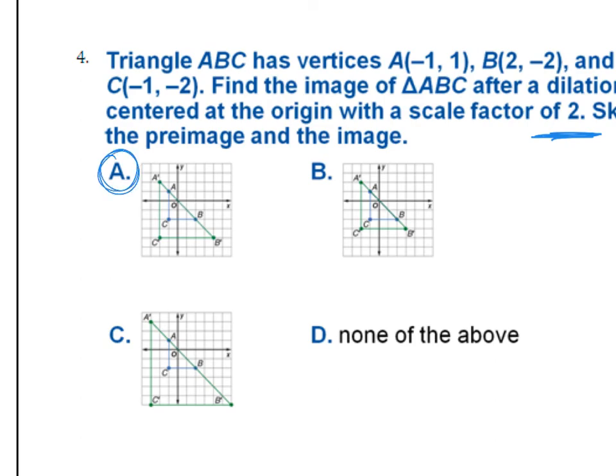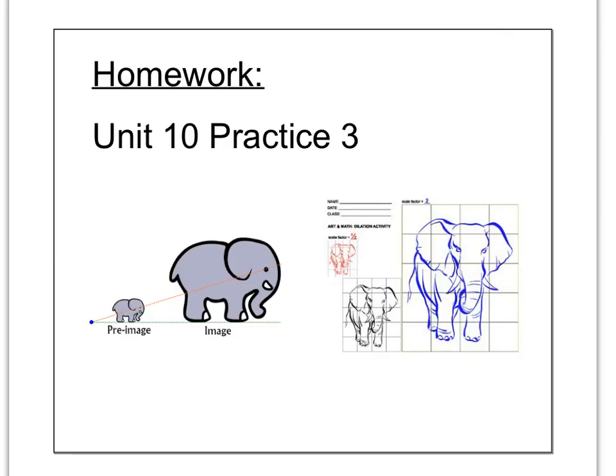The answer is A. So what happened on A is if you take all the points, A prime if it went through a scale factor, a dilation with a scale factor of 2 would have been at (-2,2). B prime would have been at (4,-4) and C prime would have been at (-2,-4). And I just use these points from up above and I multiplied them all by 2. Well, (-2,2) is right here, (4,-4) is right here, and (-2,-4) is right here and those all landed on the final image in choice A.